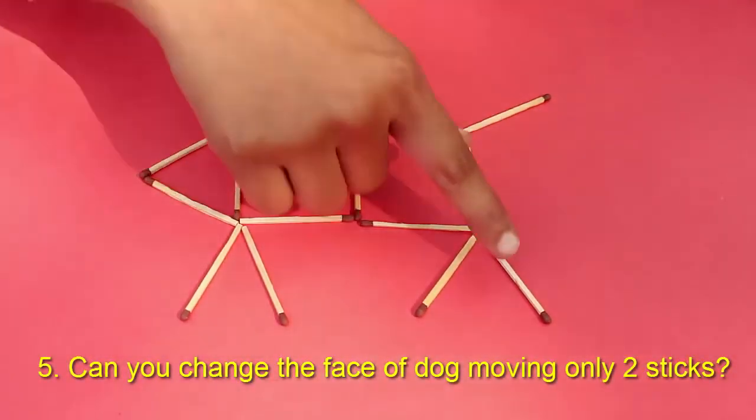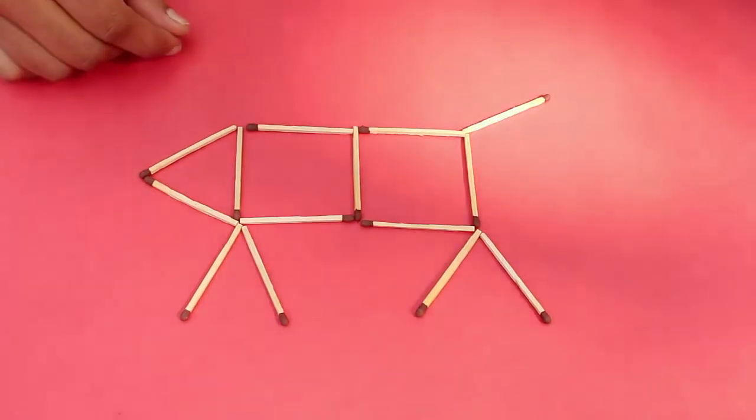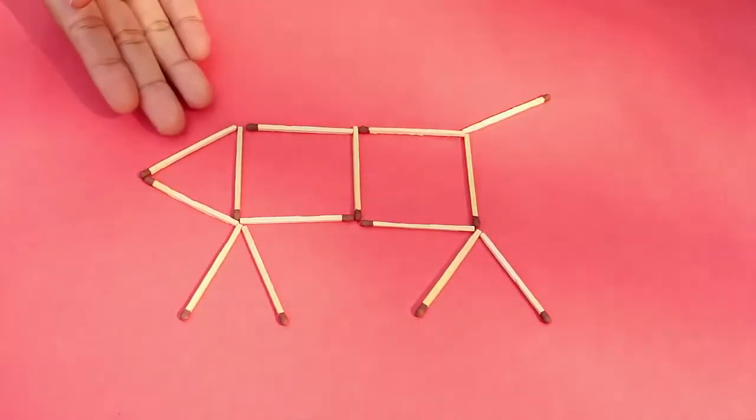Here's a dog facing left. By shifting two matchsticks, you've got to make a dog facing the right side.